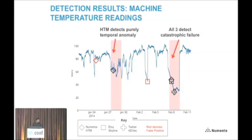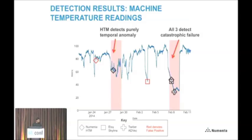On the machine temperature scenario focusing on the last two anomalies: all three detect the catastrophic failure. Only the Numenta HTM detector detects the temporal anomaly — not a surprise because HTM looks at temporal sequences, not just IID statistics. In this case, HTM gives one false positive, Skyline gives another false positive in the middle, and there are no false positives from Twitter.